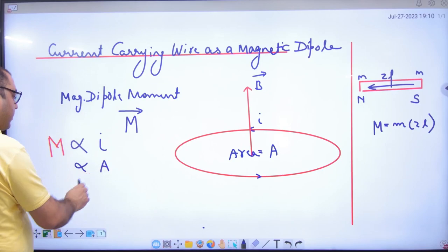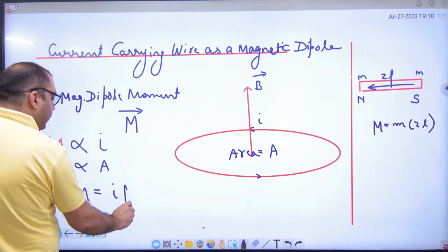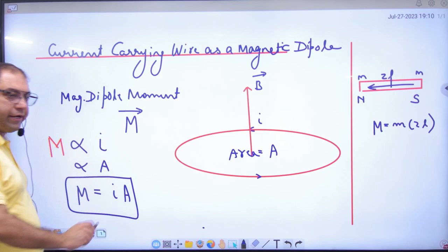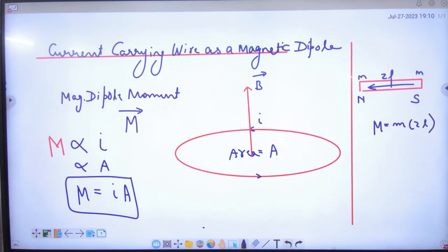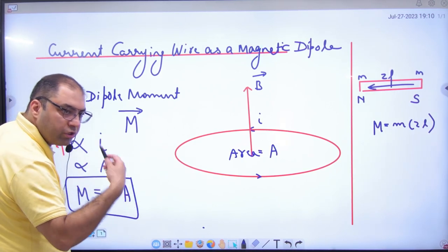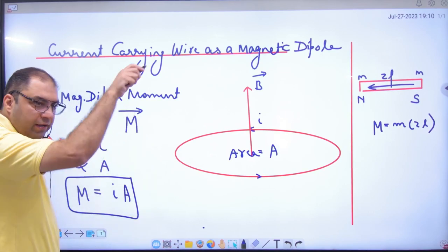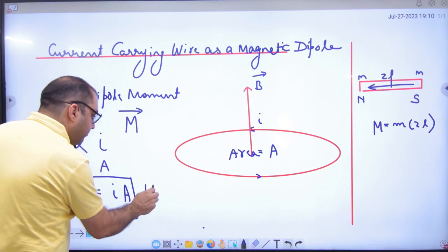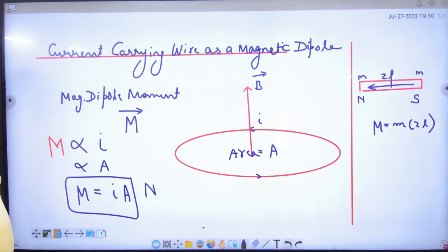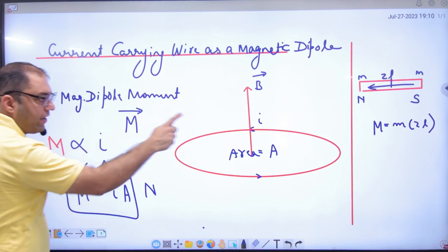So it depends on the area. The answer is M equals current into area. And if the number of turns is N, then M will be N times: M = N × I × A.